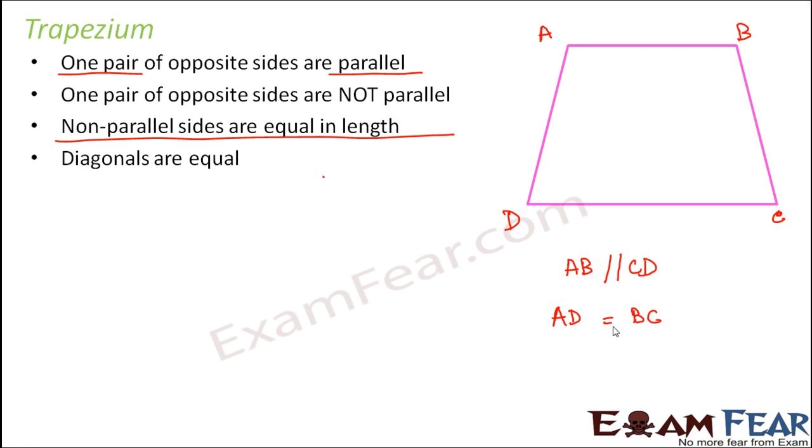Here diagonals are equal. So if you draw the diagonals AC and BD, these would be the two diagonals. We see that AC is equal to BD in case of a trapezium.